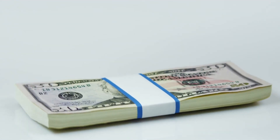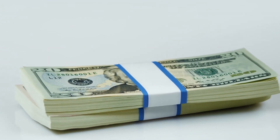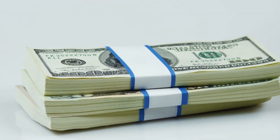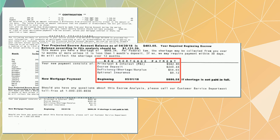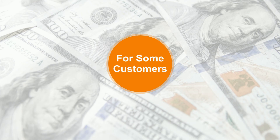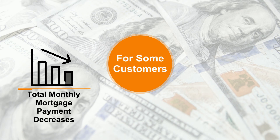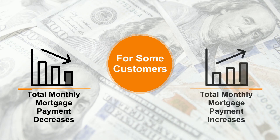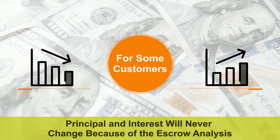Due to the annual analysis, the amount of money deposited into your escrow account may change every year. As a result, it is normal that your total monthly mortgage payment amount may change after the escrow analysis is completed. All customers will experience the analysis every year for the life of the mortgage loan. For some customers, the result of the escrow analysis may cause their total monthly mortgage payment amount to decrease, while other customers may see it increase. However, the total amount changes only because the portion of the payment which is deposited in the escrow account has changed.